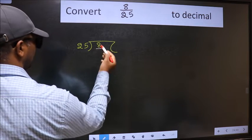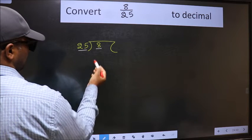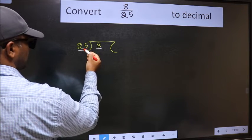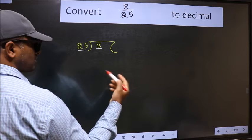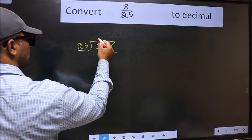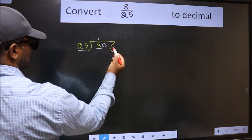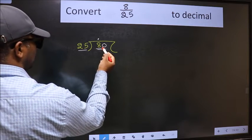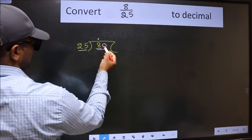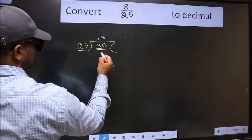Here we have 8 and here 25. 8 is smaller than 25, so what we should do is put a dot and take 0. So, 80. A number close to 80 in the 25 table is 25 threes, 75.